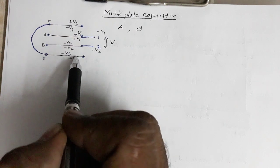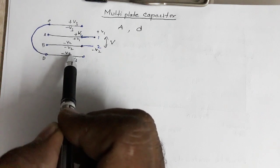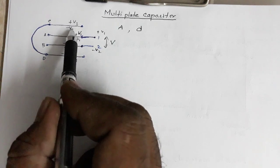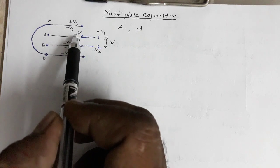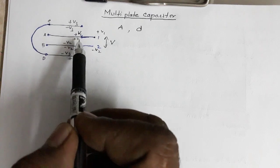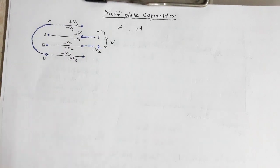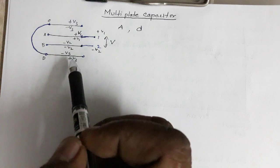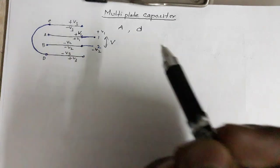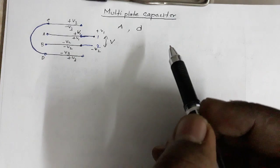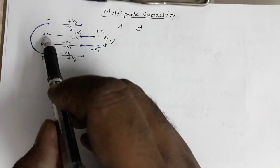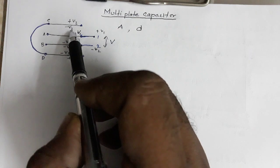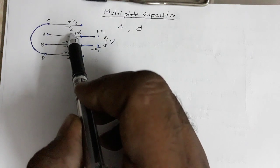Since plate B is at minus V2, the charge induced on the adjacent side of the floating plate is positive, making that face plus V3. The sign on the other face is reversed. We have now assigned potentials to all plate faces, and from this we can identify the capacitors that form between adjacent plates.